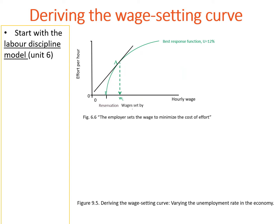On the x-axis, we have the hourly wage — that is, the nominal wage earned by the employee. On the y-axis, we have the effort per hour by the employee. The best response function represented here indicates that for each level of effort, there is one associated level of nominal wage.